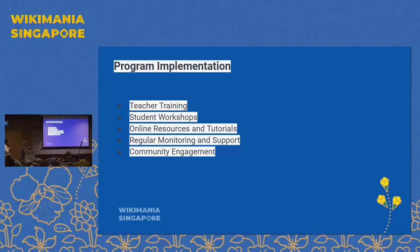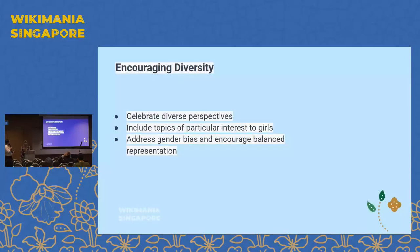For program implementation: first, we do teacher training; then we run workshops for students to teach them how to edit Wikipedia and the basics of editing. We provide online resources and tutorials. After that, we do regular monitoring with the teachers and offer support. In the final stage, we engage students with the community and other schools, and organize a competition.